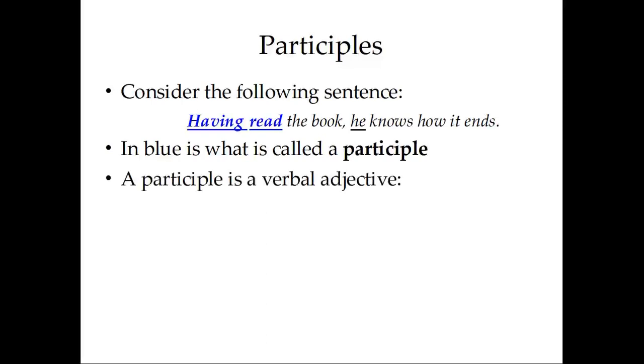A participle is a verbal adjective. It comes from a verb, in this case to read, and it modifies a noun or a pronoun, in this case he. This phrase having read the book, this participial phrase, is really a long modifier, an adjective, of this he, this pronoun he.